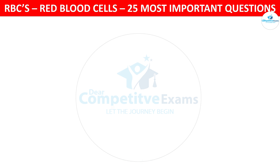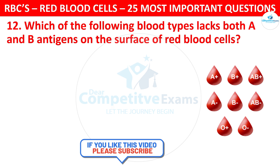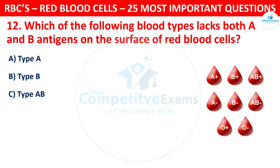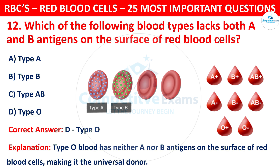Question 12. Which of the following blood types lacks both A and B antigens on the surface of red blood cells? The options are: Type A, Type B, Type AB, or Type O. The correct answer is D, that is Type O. Type O blood has neither A nor B antigens on the surface of red blood cells, making it the universal donor.